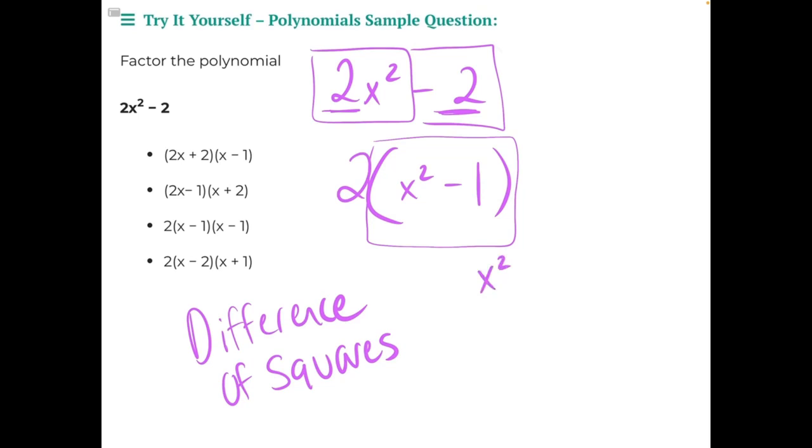So x squared is a perfect square, it just equals x squared. 1 squared would give us 1, 2 squared would give us 4, 3 squared would give us 9, and so on.